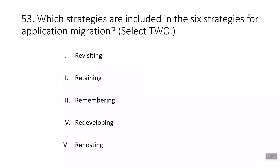Question fifty-three: which strategies are included in the six strategies for application migration? The correct answers are retaining and re-hosting. The six application migration strategies are re-hosting, re-platforming, re-factoring, re-purchasing, retaining, and retiring.